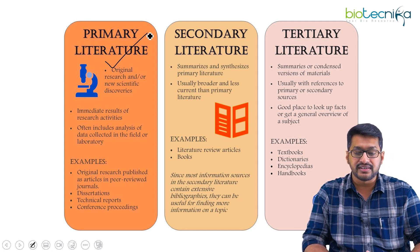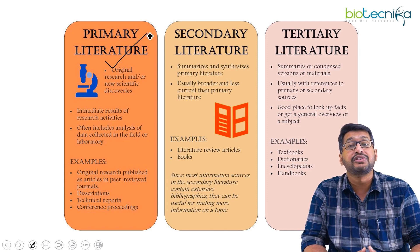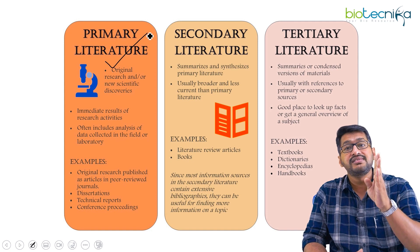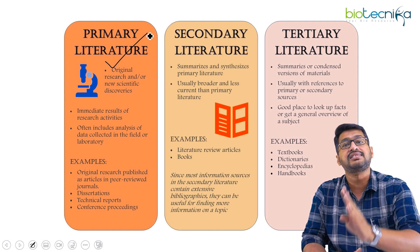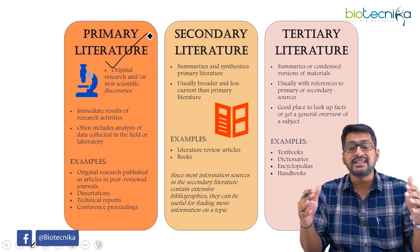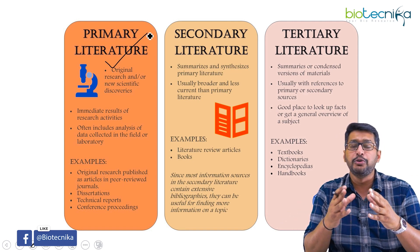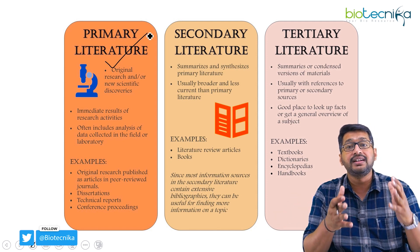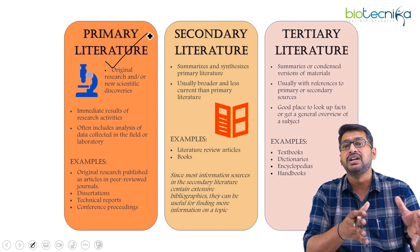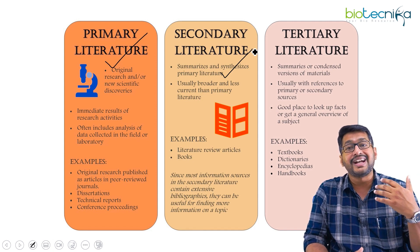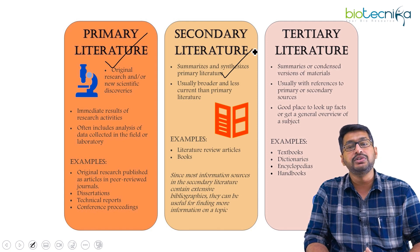Classical examples of primary literature include your dissertation work, technical reports, and certain conference proceedings. Moving on to secondary literature — this is the summarization or synthesis derived from the primary literature. It is usually broader and many times less current than the primary literature. For example, compiling data on COVID from the last two or three years would be considered secondary literature. Writing reviews, book chapters, or books falls into this category.